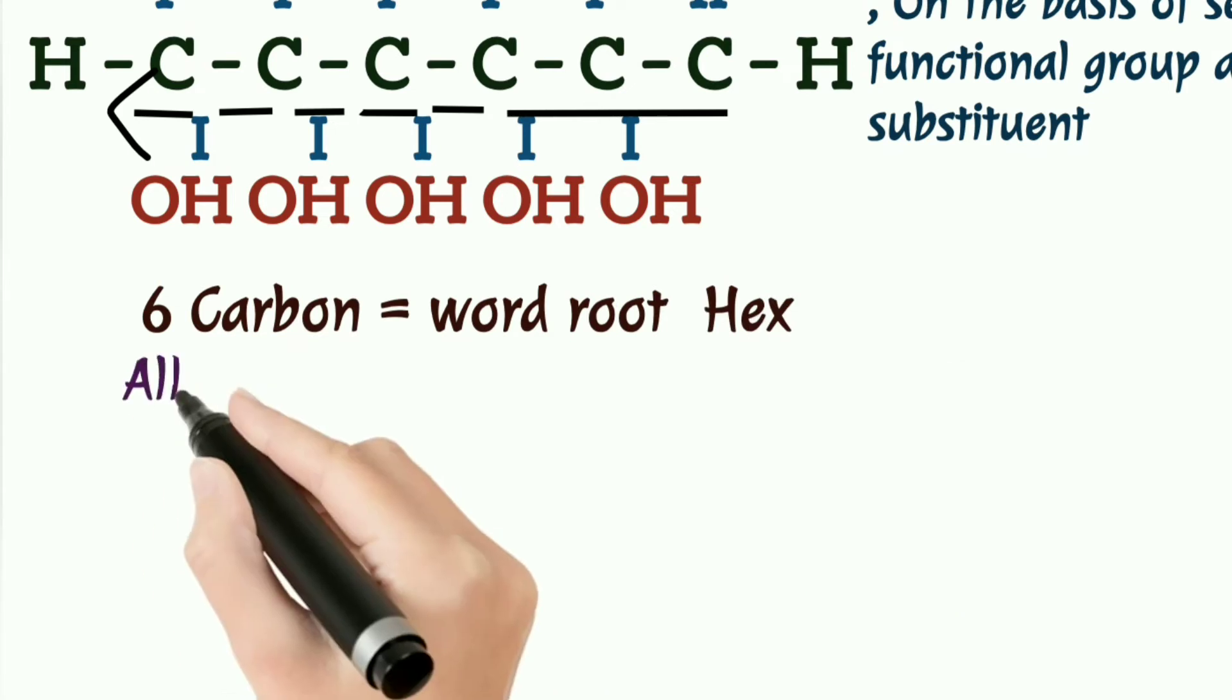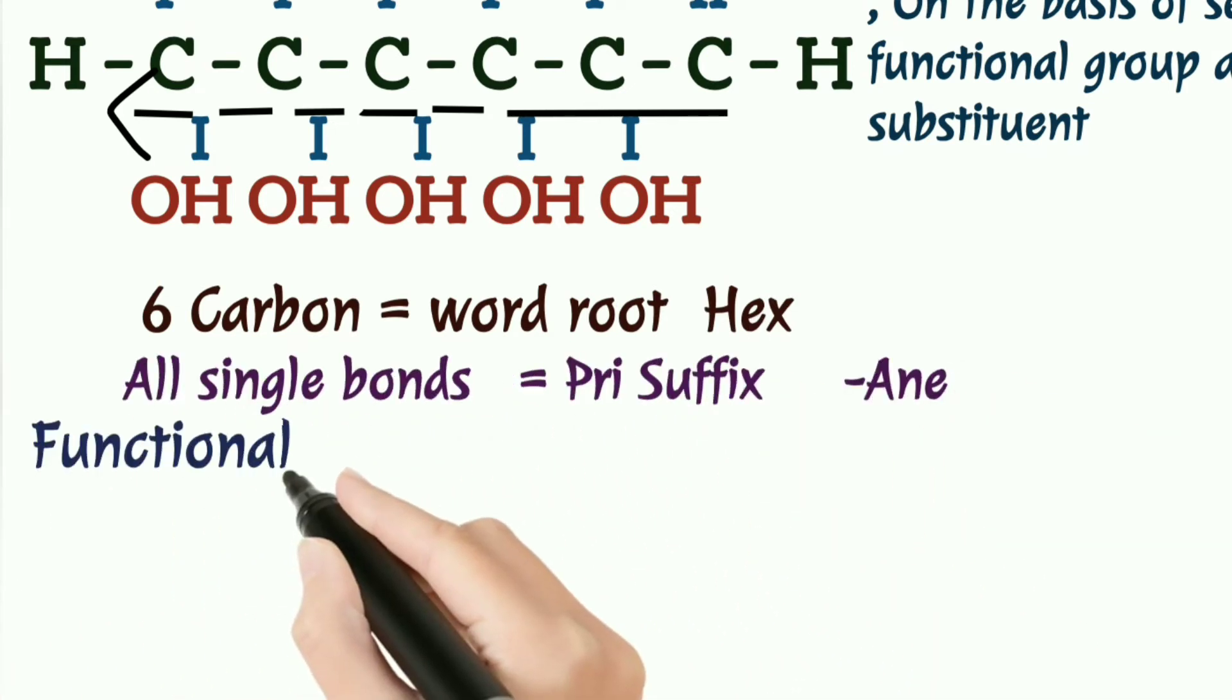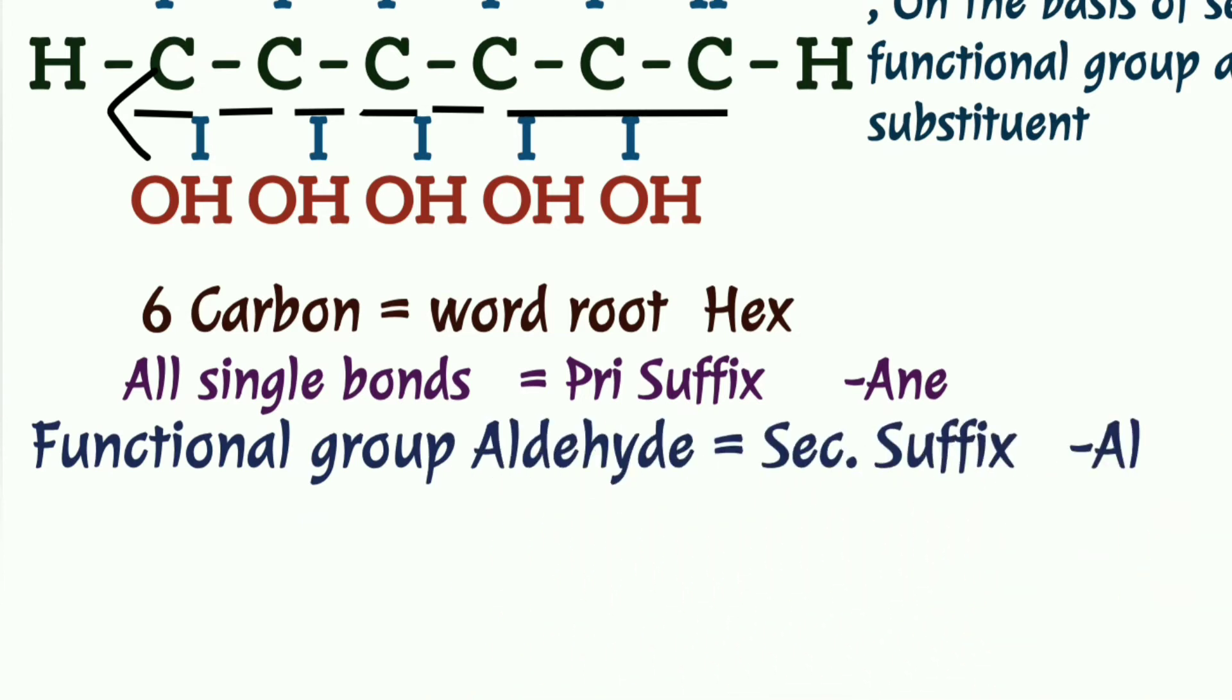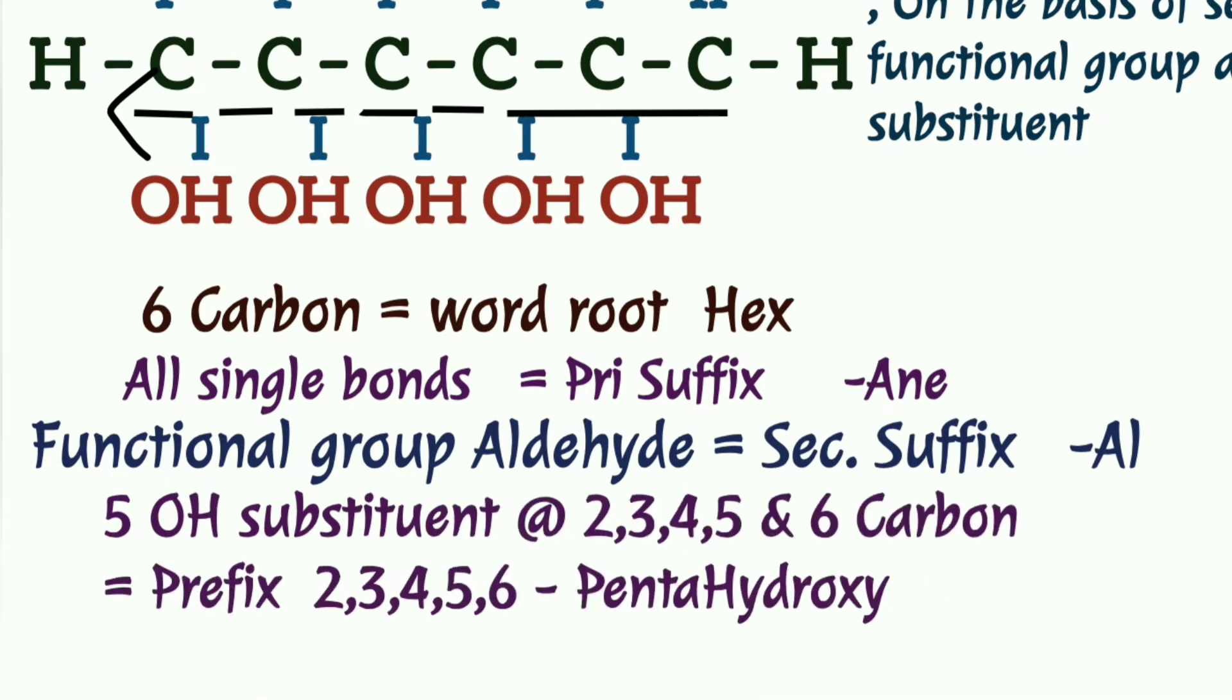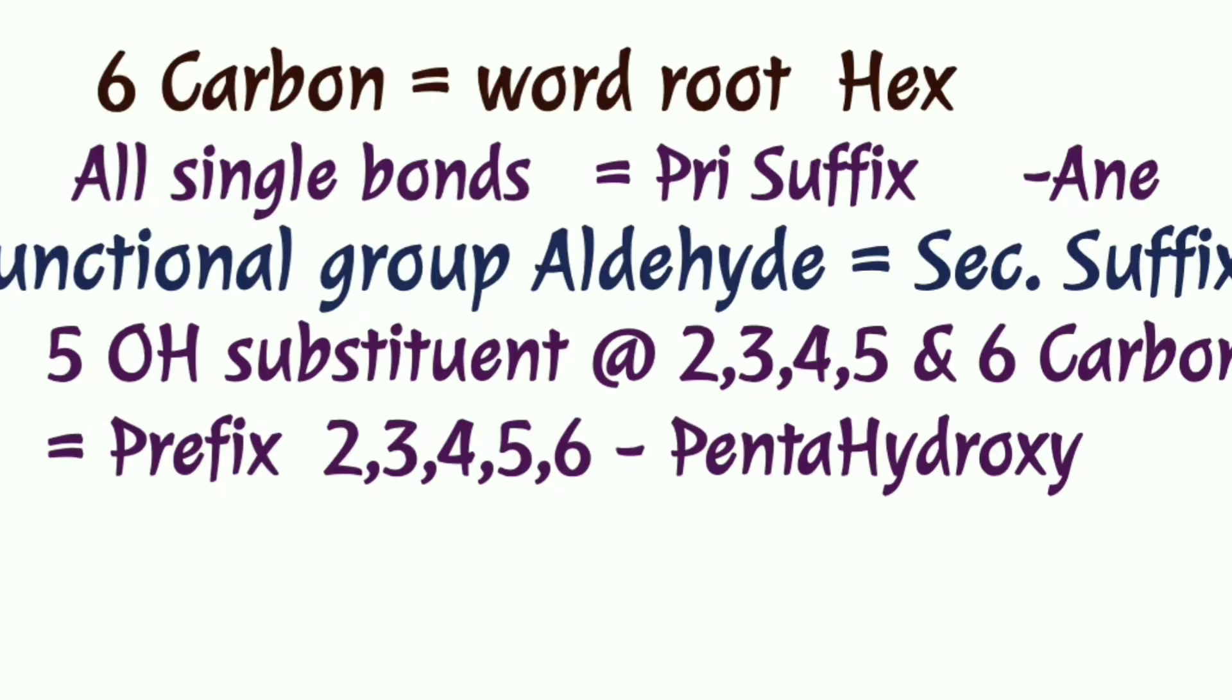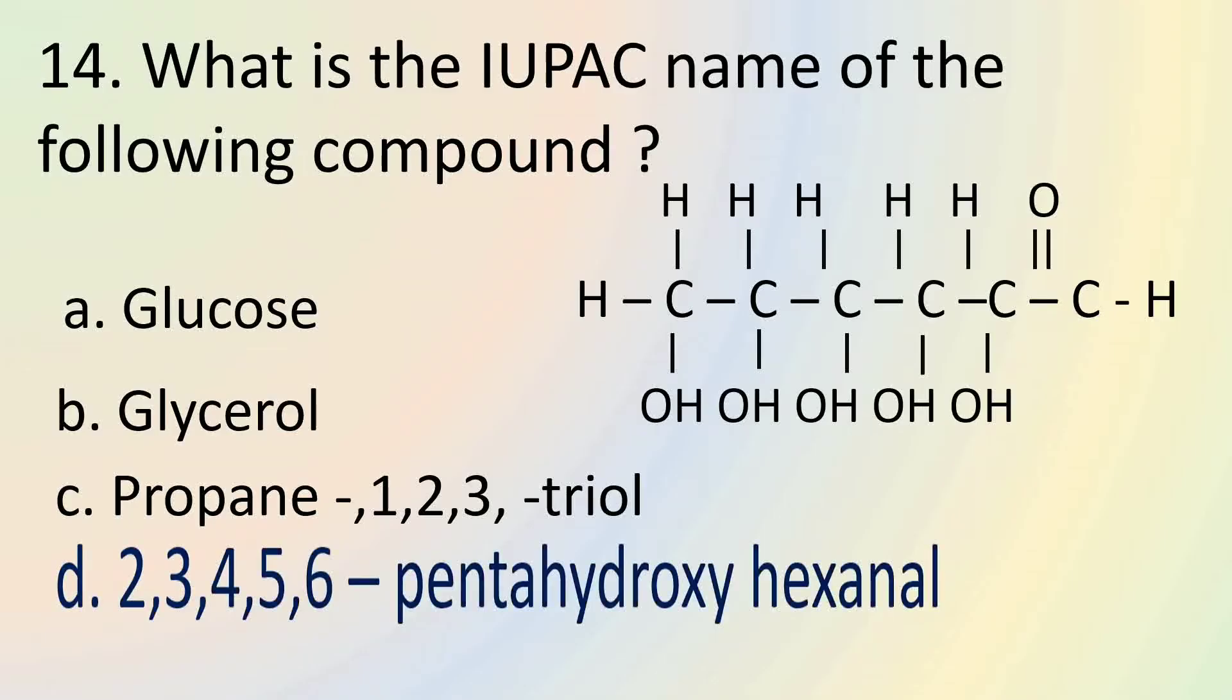There are six carbons, so word root becomes hex. All are singly bonded, primary suffix becomes -ane. The functional group CHO is assigned as secondary suffix -al. The five OH substituents at 2, 3, 4, 5, and 6th carbon are given prefix 2,3,4,5,6-penta-hydroxy. And the IUPAC name becomes 2,3,4,5,6-penta-hydroxy hexanal.